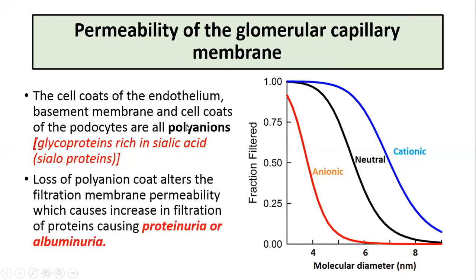In diseases like nephritis, the polyanion coat is altered, or the negative charges in the glomerular wall are lost. In that case, the permeability to anions will be increased, causing increased filtration of proteins and albumins, leading to proteinuria or albuminuria.